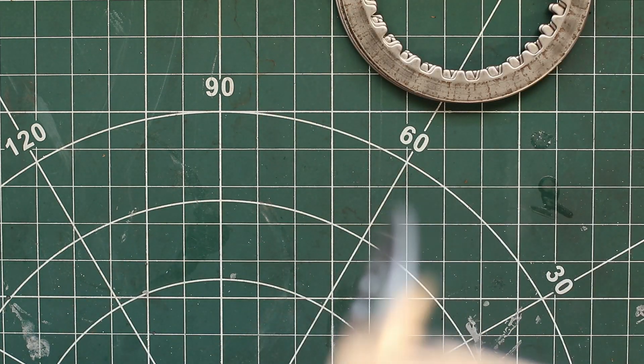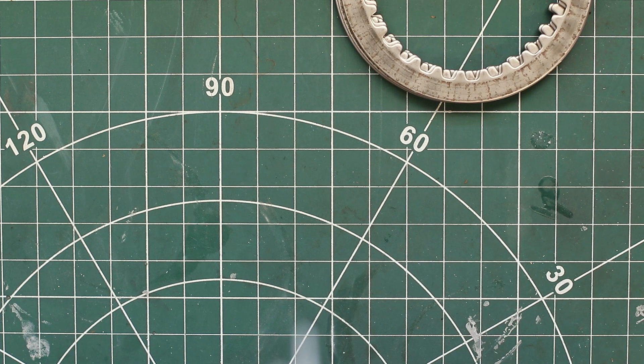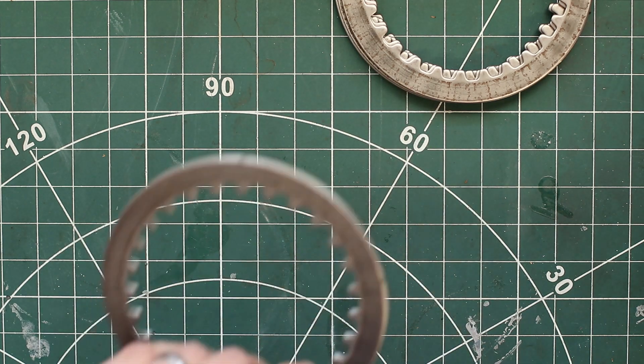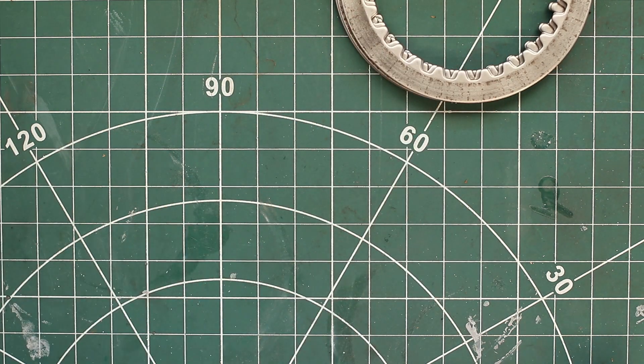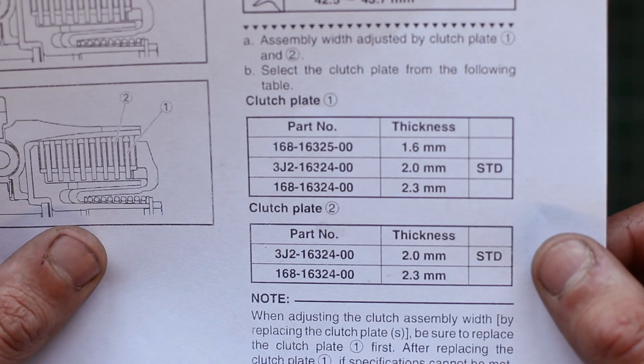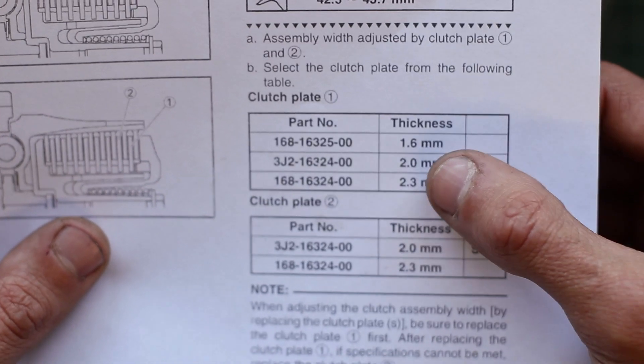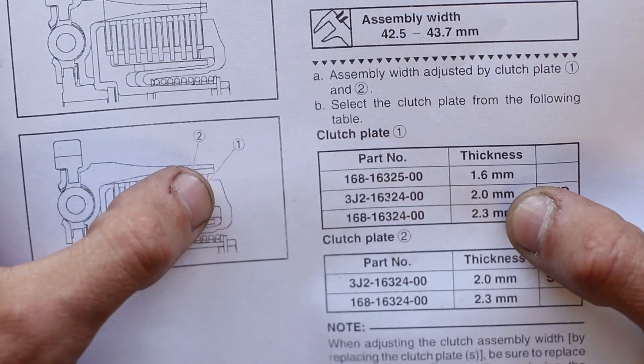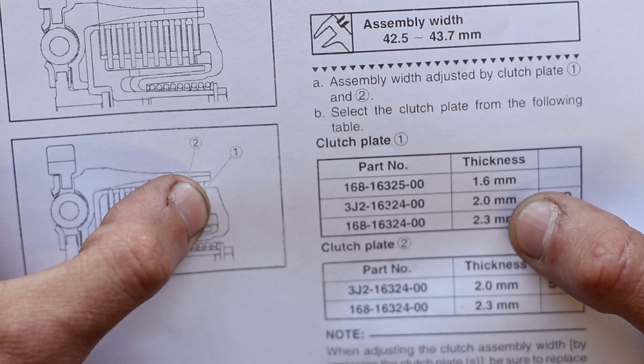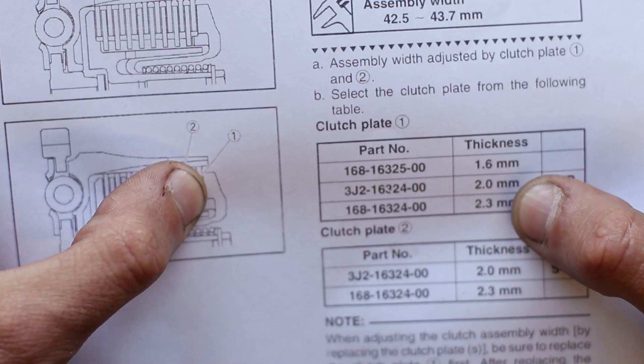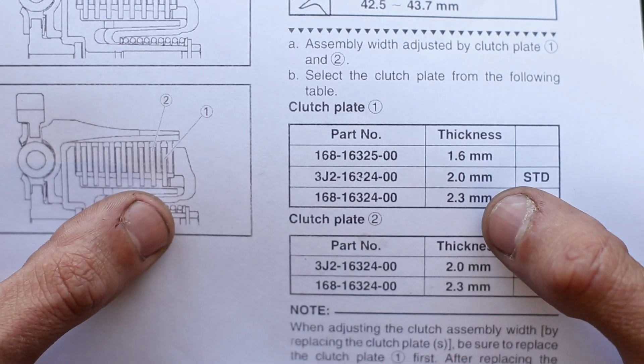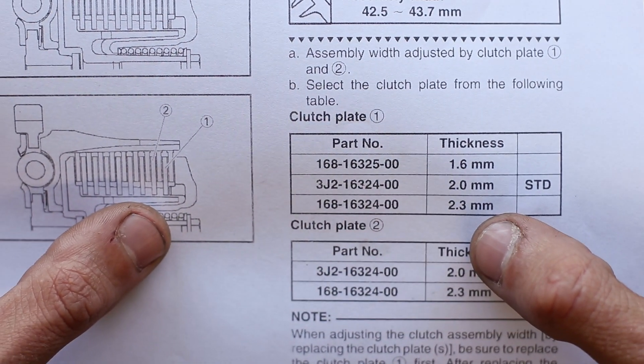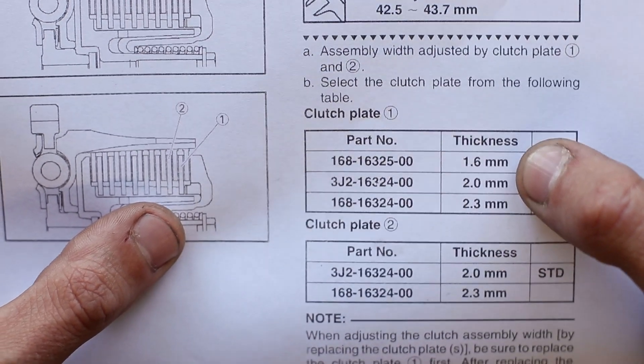All of them are 2 millimeters apart from number one, which is 2.25 actually, as I've said. We've got a table in the service manual with the different thicknesses for the clutch plates. As you can see here, 2 millimeters for clutch plate number one, which is facing towards the clutch cover. The standard is 2 millimeters, and you've got a thinner one and a thicker one.